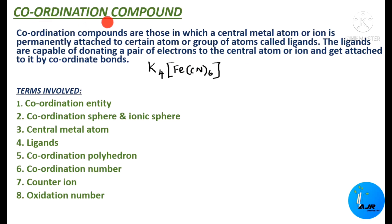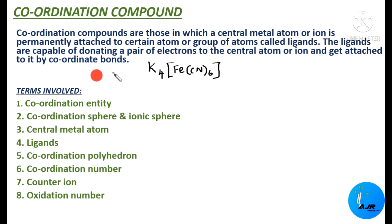First, let us know what is a coordination compound. Coordination compounds are those in which a central metal atom or ion is permanently attached to a certain atom or a group of atoms called ligands. This group of atoms are called ligands, and the ligands are capable of donating a pair of electrons to the central atom or ion, getting attached to it by coordinate bonds.